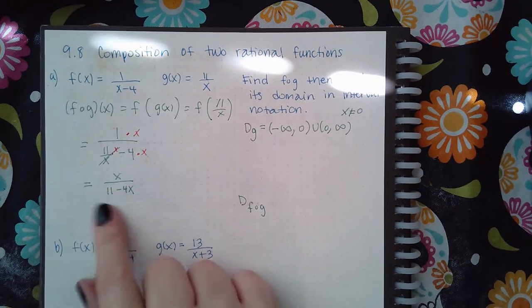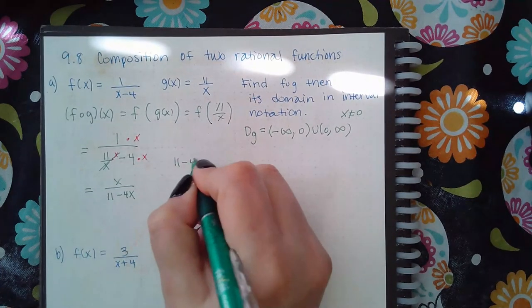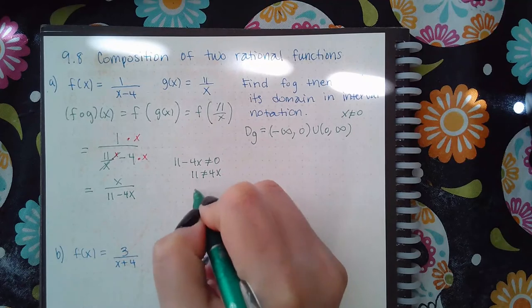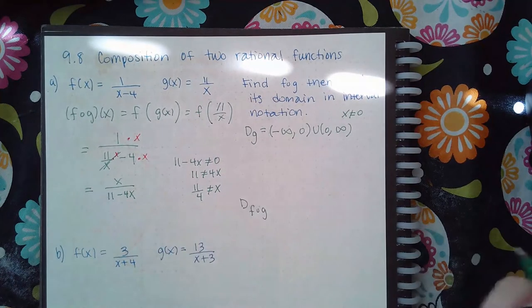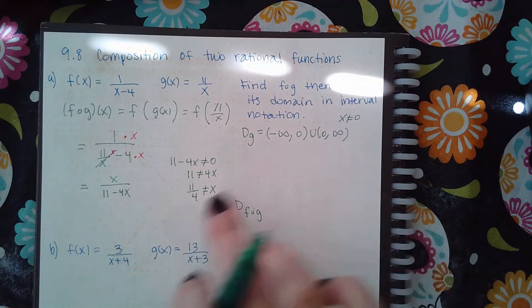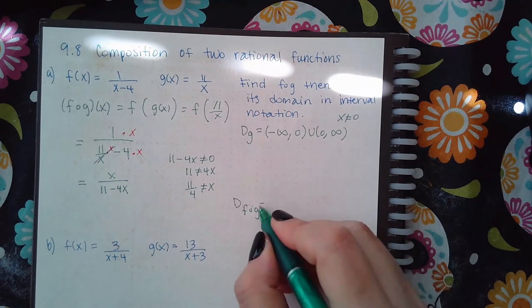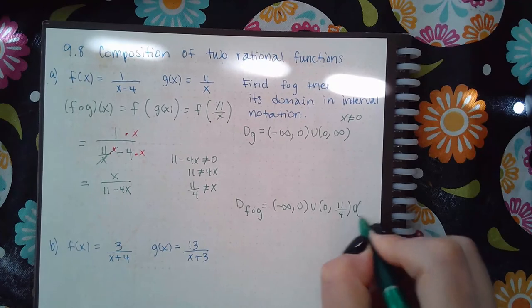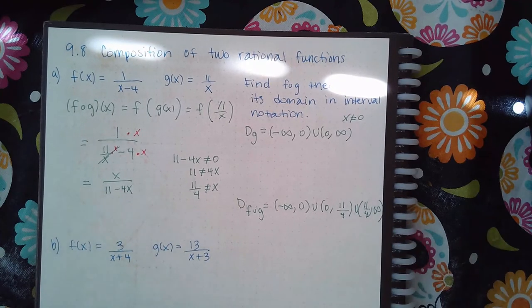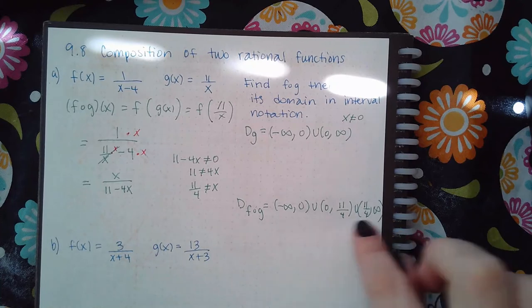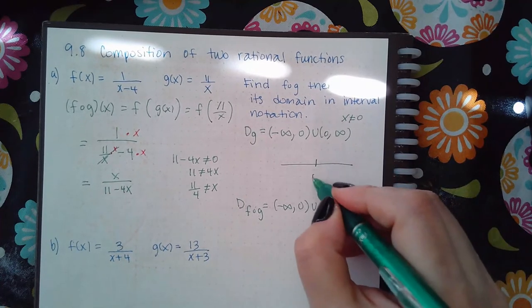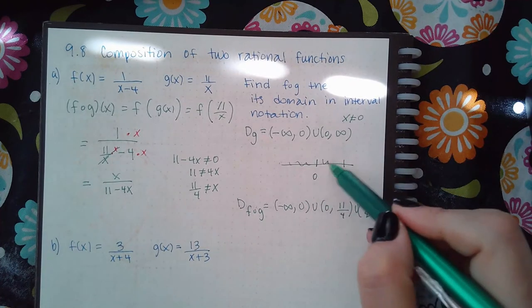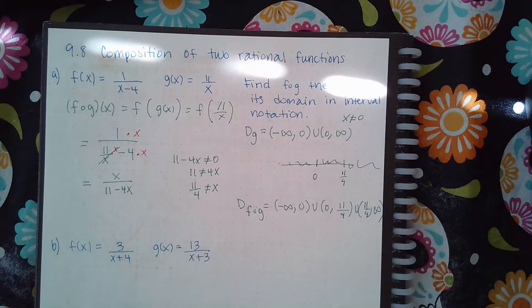Now, whether those outputs of g lead to a final output is what we consider when looking at the simplified version. That denominator cannot equal 0, which means 11 cannot equal 4x, or x cannot equal 11 over 4. So I need to remove that value, making the domain negative infinity to 0, then 0 to 11/4, then 11/4 to positive infinity. On the number line, 0 comes first and the positive number 11/4 is to the right of it.